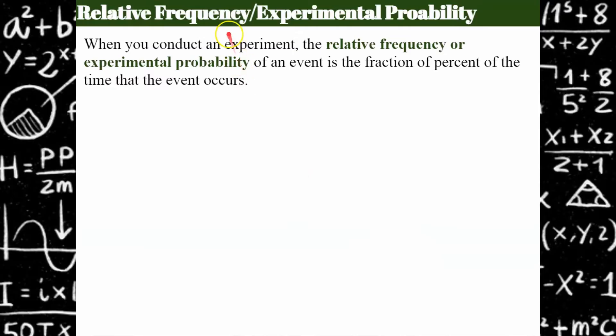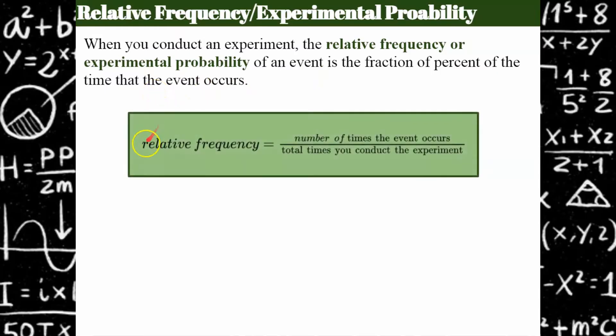First let's talk about relative frequency, which is also experimental probability. This happens when you conduct an experiment. The relative frequency or experimental probability of an event is the fraction or percent of the time the event occurs. We talk about relative frequency, and we have the number of times that the desired event occurred out of the total number of times you conducted the experiment.